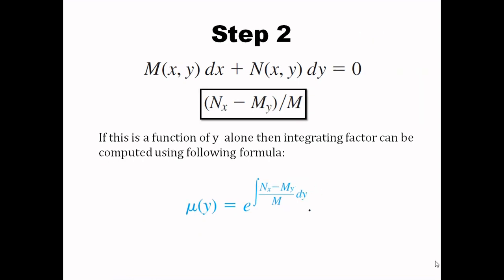Suppose the integrating factor is not a function of x alone and depends on both x and y. In that case, we compute another function, which is (Nx minus My) divided by M. If this is a function of y alone, then we compute the integrating factor as e raised to the integral of (Nx minus My) over M. If this is a function of y alone, this will be our integrating factor to multiply with the differential equation to make it exact.